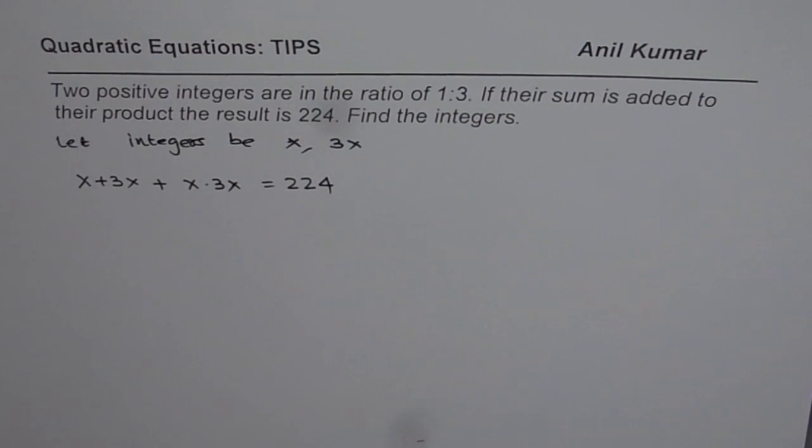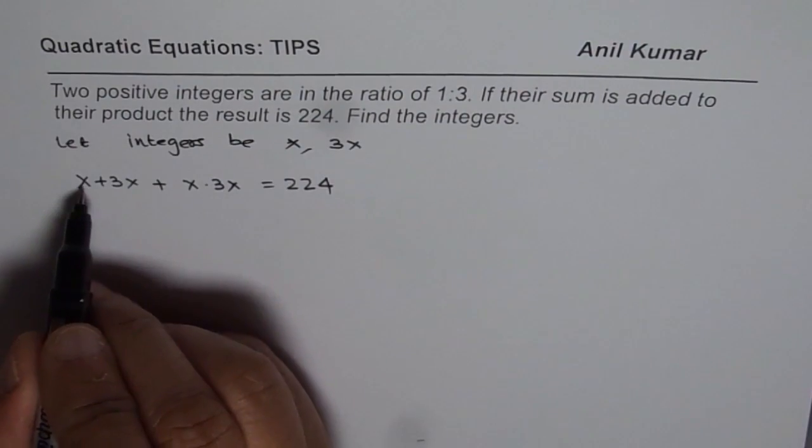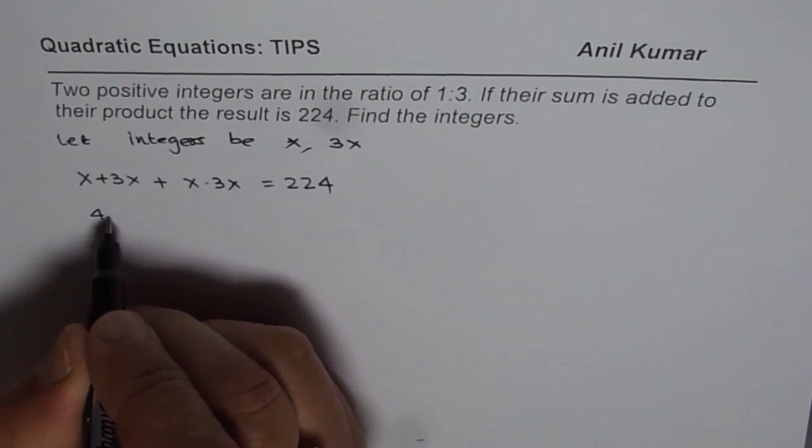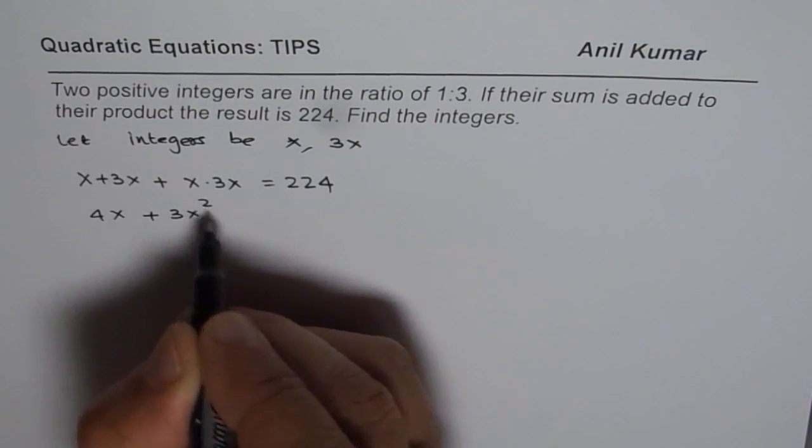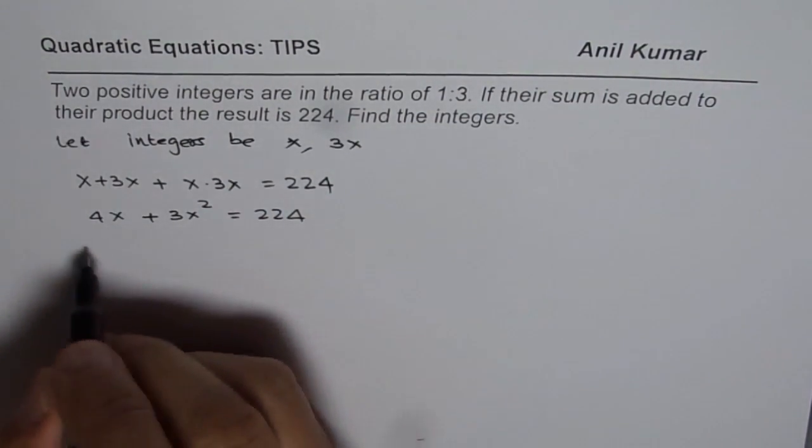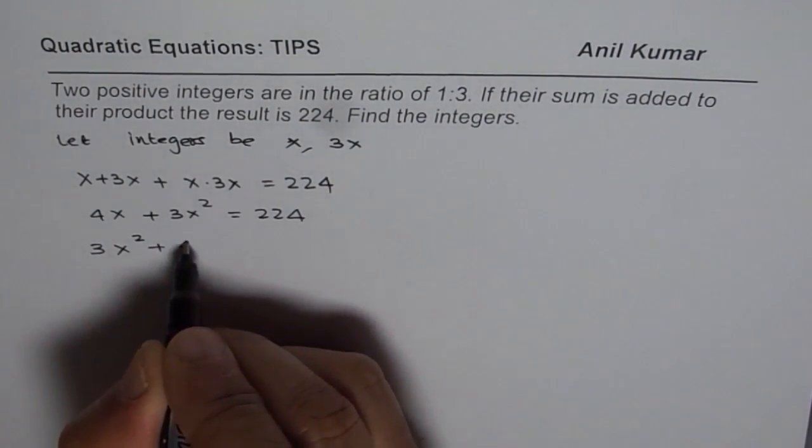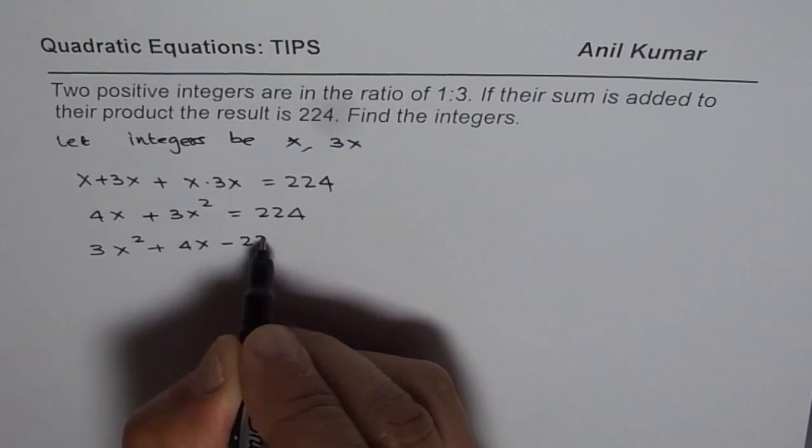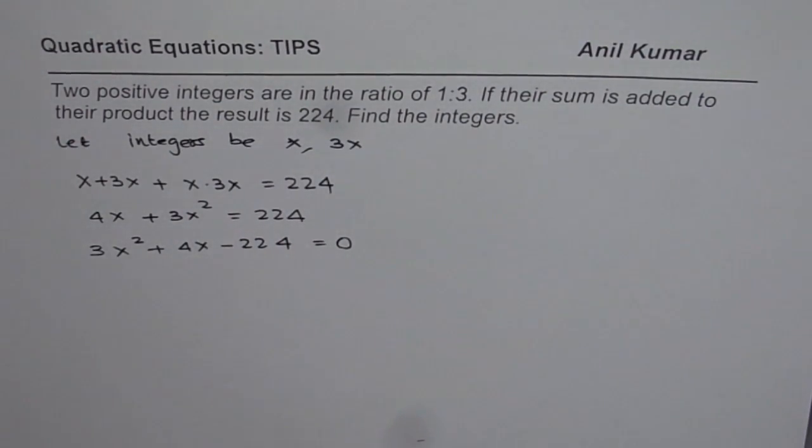That is the equation that leaves us with a very simple quadratic equation. So what do we have here? x plus 3x is 4x. So we have 4x plus 3x square equals to 224. We can bring all the terms to one side and then solve. So we have 3x square plus 4x minus 224 equals to 0. This is the quadratic equation which we need to solve.